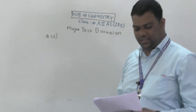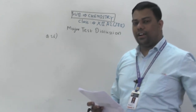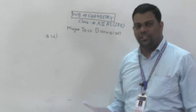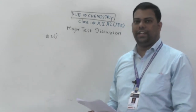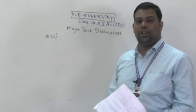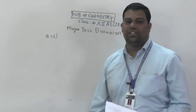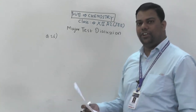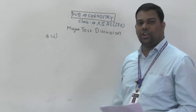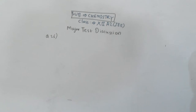Question number 26 asks: which of the following will not conduct electricity in aqueous solution? For conduction of electricity, a substance must dissociate into its constituent ions. Copper sulfate can dissociate into its ions. Sugar, however — its formula is C₁₂H₂₂O₁₁ — will dissolve but will not convert into ions. It remains as it is. Common salt (NaCl) dissociates. So the answer for question 26 is option B.